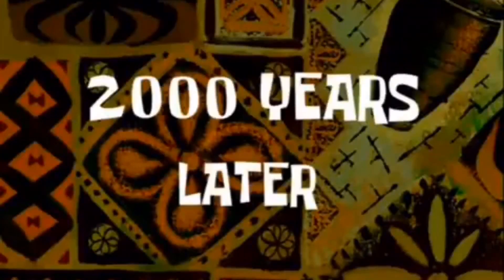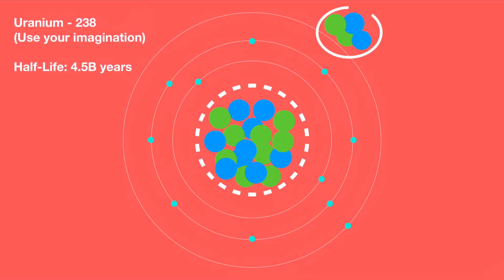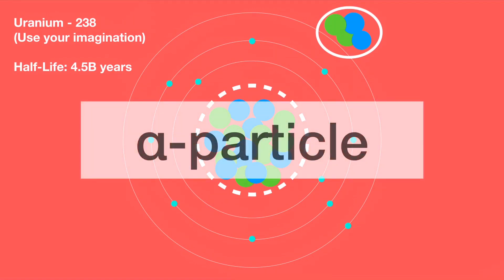Two thousand years later. There it is, the first form of emission. Two neutrons and two protons in a helium nuclei. For simplicity, this type of decay is called an alpha particle.